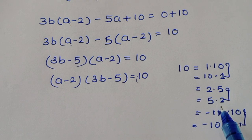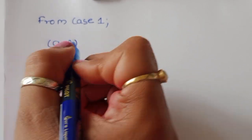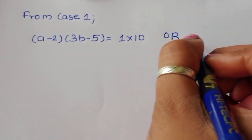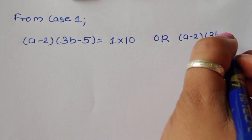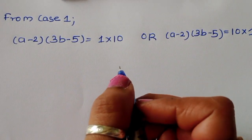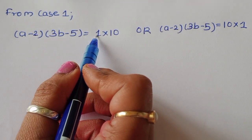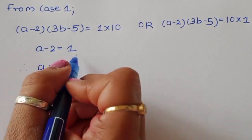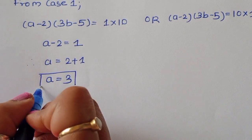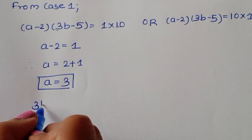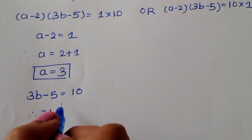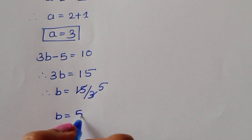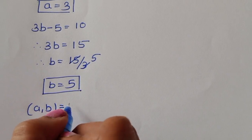Case 1, first subcase: (a − 2) = 1 and (3b − 5) = 10. From the first equation, a = 3. From the second, 3b = 15, so b = 5. Thus (a, b) = (3, 5) and a + b = 8.